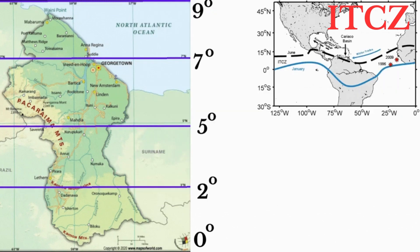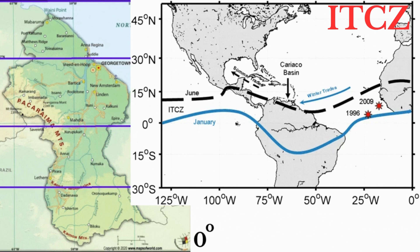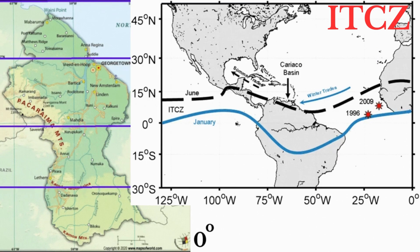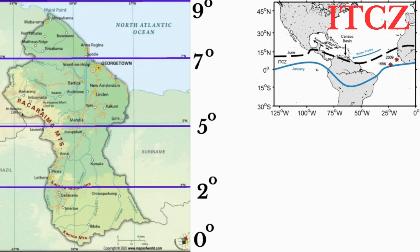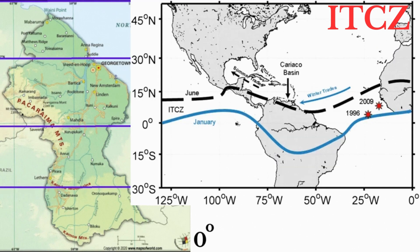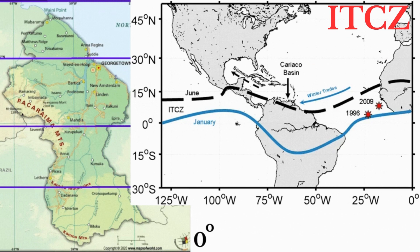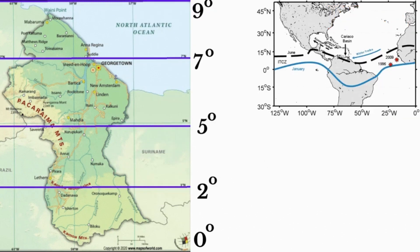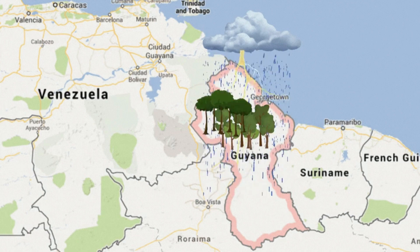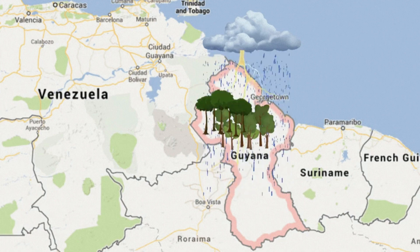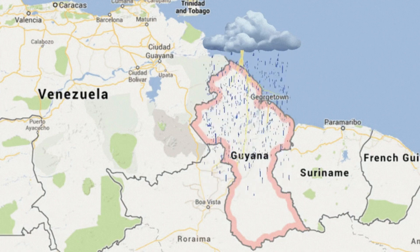Two very heavy periods of rainfall also occur as a result of the ITCZ passing over on its way north and then passing over again on its return south. The ITCZ is formed as a result of the northeast and southeast trade winds converging at or near the equator. The heavy rainfall along with high temperatures throughout the year support the development of tropical rainforests in Guyana.